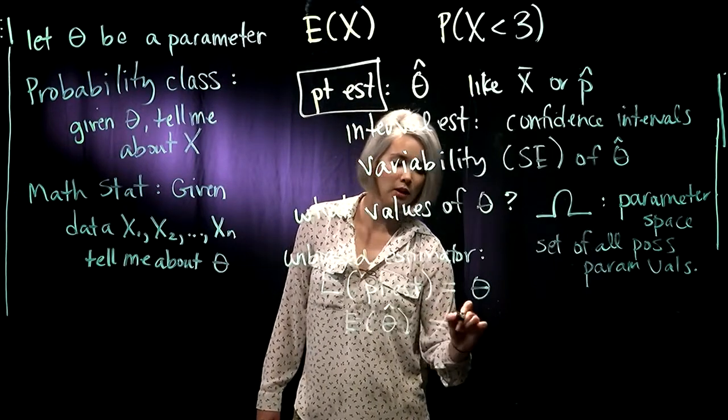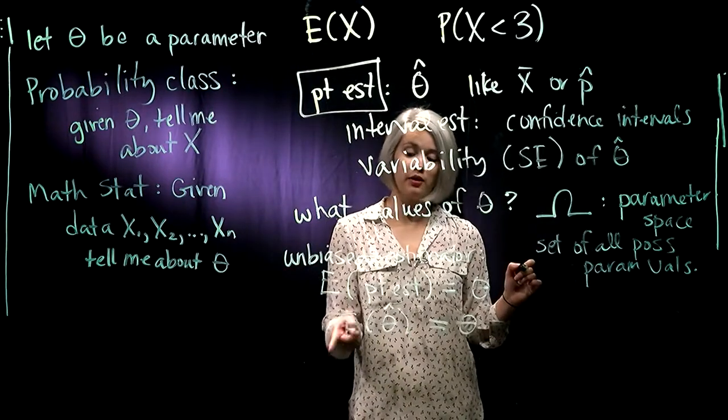So if we want to write that with notation, expectation of theta hat, we want that to be equal to theta. So if we have an unbiased estimator, the expectation of our point estimate is equal to our parameter.